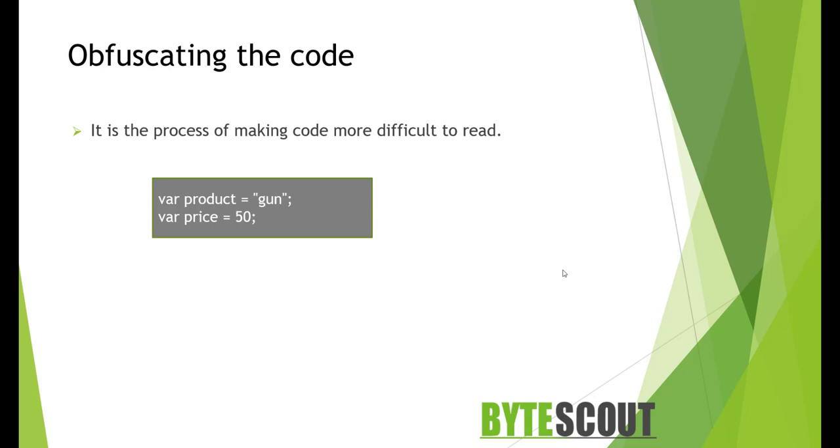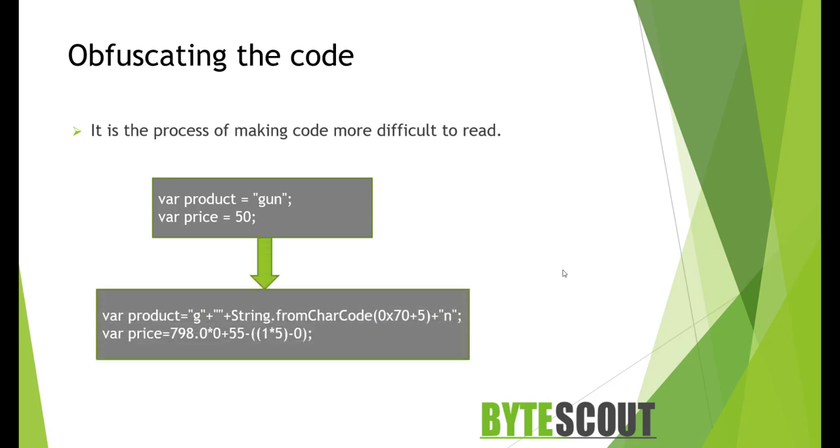So now when obfuscation is applied to them, it would become this. Now, if you see this carefully, then you can see that from the first line, it splits out the first letter of the gun and concatenates it to a blank character, which is really adding nothing to it.